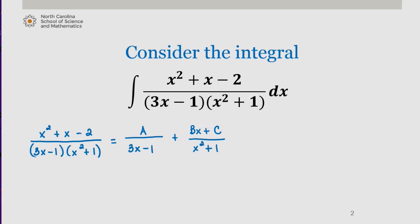Our goal, as before, is to solve for the constants A, B, and C. We multiply both sides of this equation by the original denominator, since it's the common denominator among all rational expressions.